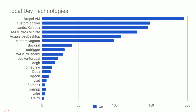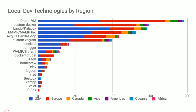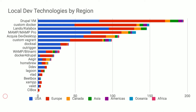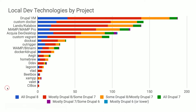Breaking it out by region: nobody outside the US is using Outrigger or DDEV — the others are pretty uniformly scattered across all regions. By project type: for mostly Drupal 8 and all Drupal 8, the top three are Docker, Lando, and Drupal VM. The proportion for Doxol, DDEV, Docker for Drupal, and Ager are really surprising in those groups. Nobody's using Outrigger or Doxol for anything other than Acquia-hosted projects.